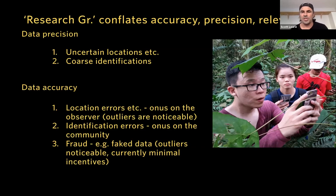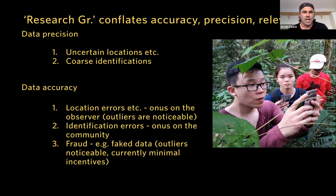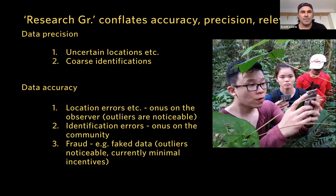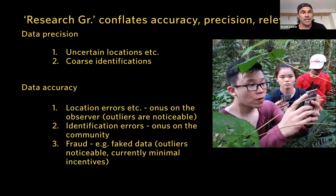In terms of data accuracy on iNaturalist, location errors are one issue — the onus for curating those is really on the observer. Obvious outliers — like an observation in the middle of the ocean — the community might notice and flag, kicking it into casual. But there are probably many location errors that go unnoticed because it's perfectly reasonable for the species to be there. The big one is identification errors: because of shared media and shared evidence, the onus is on the community to discuss and arrive at an accurate and precise identification.